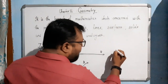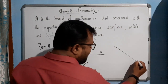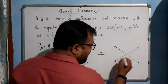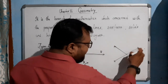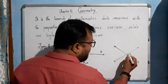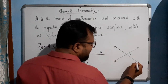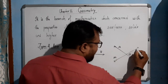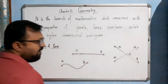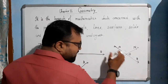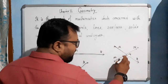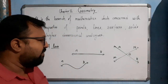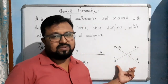When two lines cross each other, they meet at a point — they intersect at a point. Suppose lines AB and MN cross each other at point O. This type of line is known as intersecting lines.